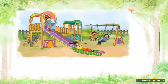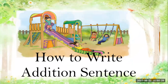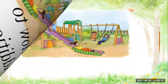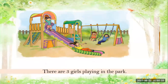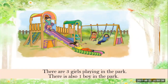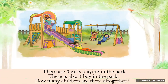Look at the picture — how to write an addition sentence. As you can see here, there are three girls playing in the park, and there is also one boy in the park. So how many children are there altogether? Three girls are playing in the park and one boy is in the park.